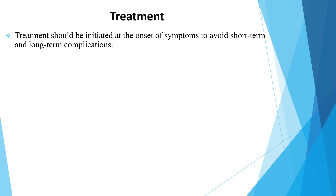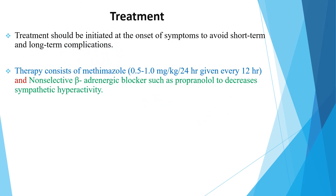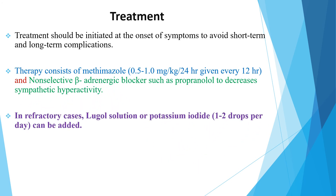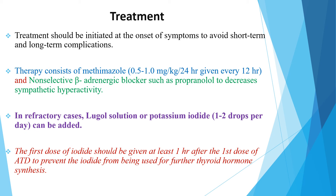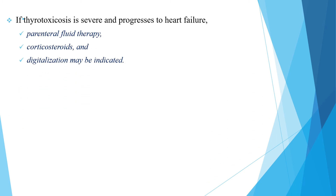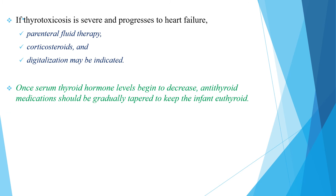Treatment of neonatal Graves disease should be initiated at the onset of symptoms to avoid short- and long-term complications. Therapy consists of methimazole 0.5 to 1 mg per kg per 24 hours in divided doses (BID), plus selective beta-adrenergic blockers such as propranolol to decrease sympathetic hyperactivity. In refractory cases, Lugol's solution or potassium iodide one to two drops per day can be added; the first dose of iodide must be given at least one hour after the first dose of anti-thyroid drugs to prevent iodide from being used for further thyroid hormone synthesis.